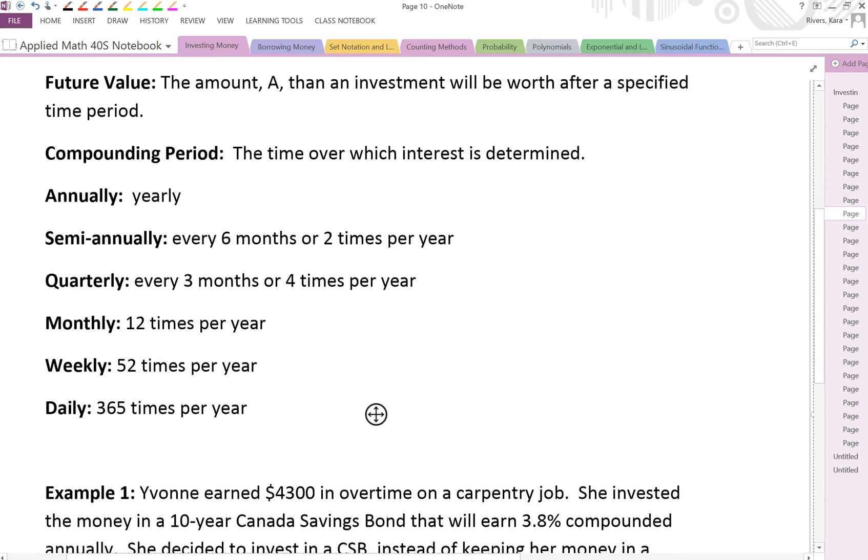Future value we've talked about. That's the amount that an investment will be worth after a specified time period. Our compounding period is the time over which interest is determined.